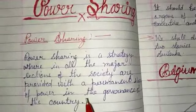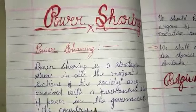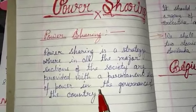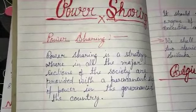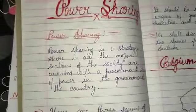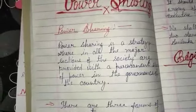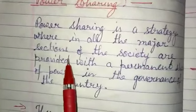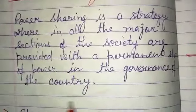The name of the first chapter is Power Sharing. Students, you have studied political science in class 9th and you found that the name of the book was Democratic Politics First, and in class 10th the name of the book is Democratic Politics Second. So in this class we shall also discuss some aspects of democracy. Power sharing is one of the aspects of democracy. Power sharing is a strategy wherein all the major sections of the society are provided with a permanent share of power in the governance of the country.